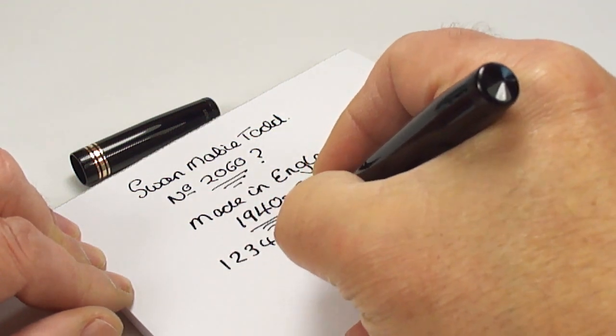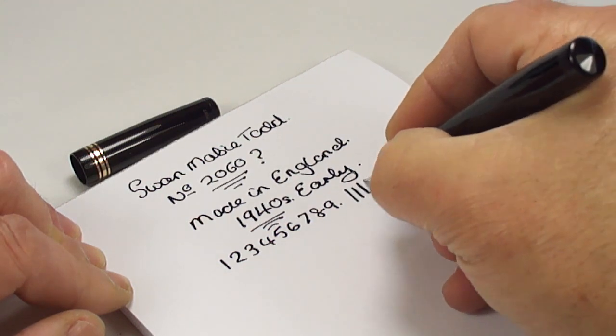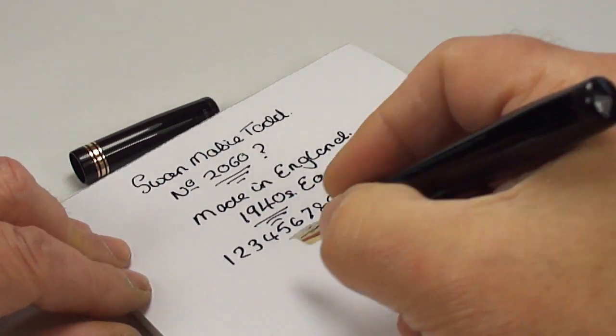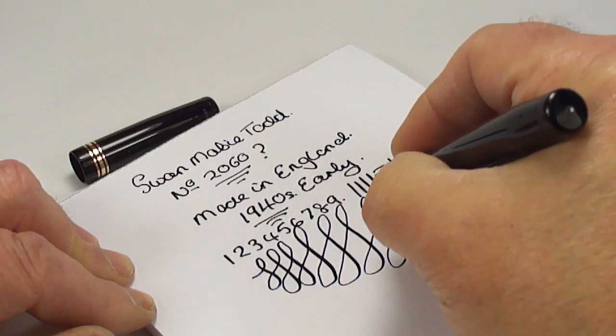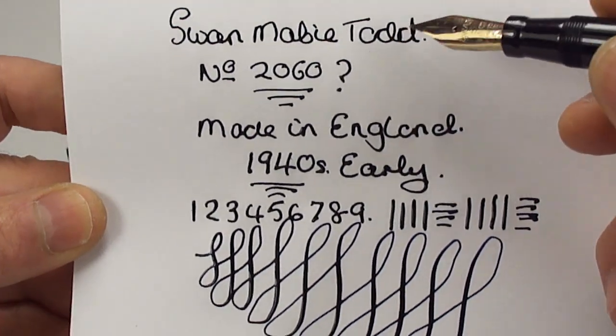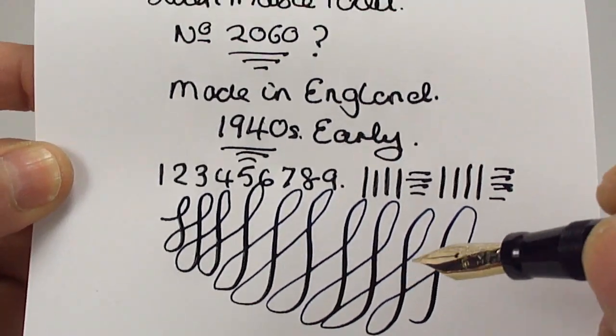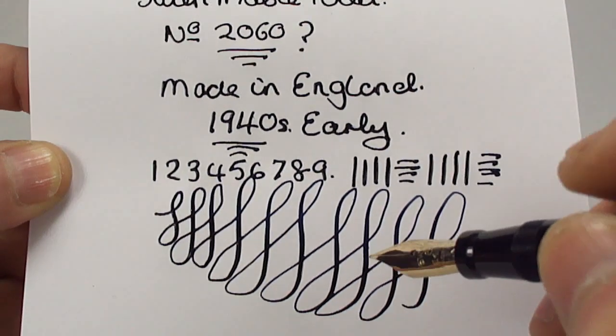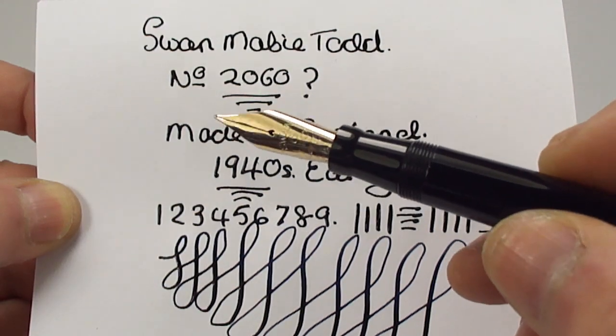It's writing absolutely lovely, as you'd expect from these nibs. Now does it have any flex? I would say yes it does. If we do some figure of eights like so - remember I would say it's writing with a fine line - if we apply a little bit of pressure on the downward stroke, we can get a little variation in line as you can see there. All in all, an absolutely gorgeous writer. Writing lovely with this large Number 6 nib.